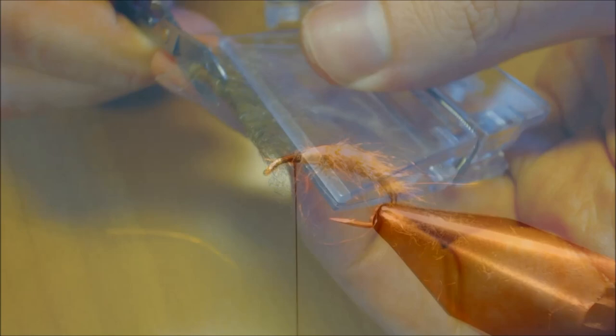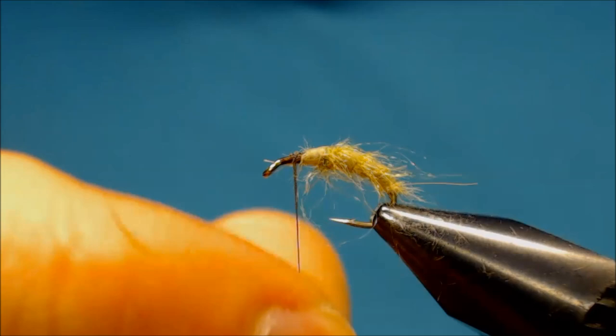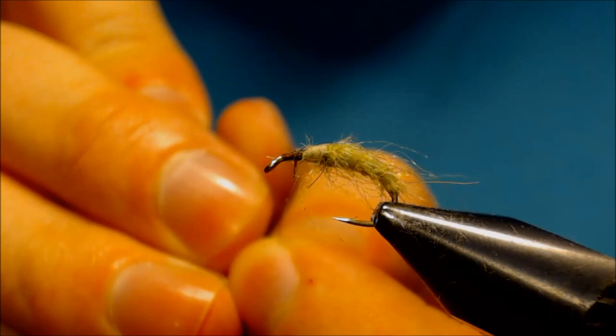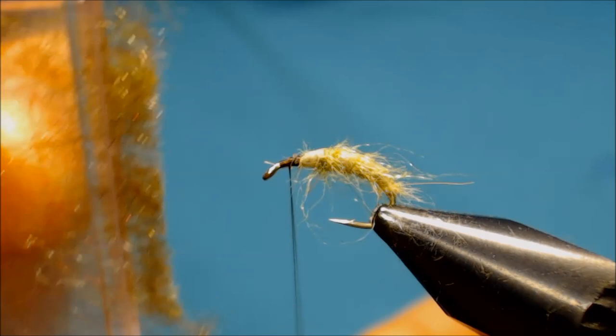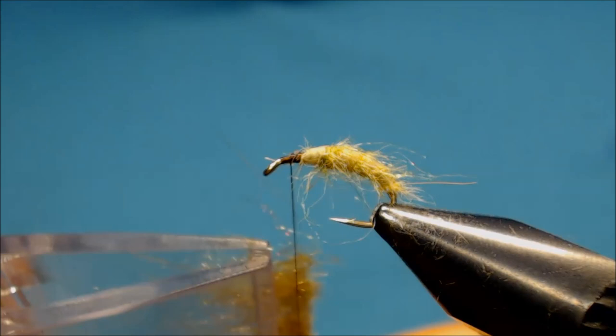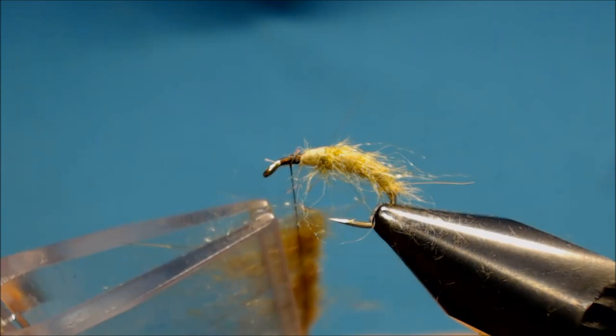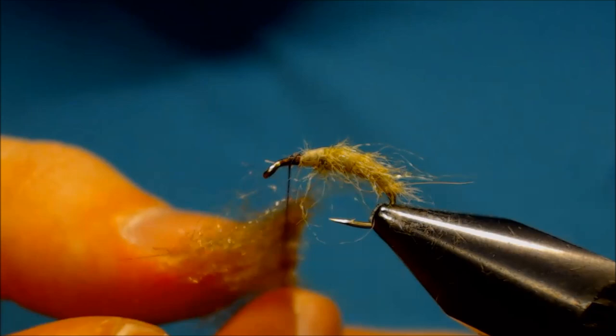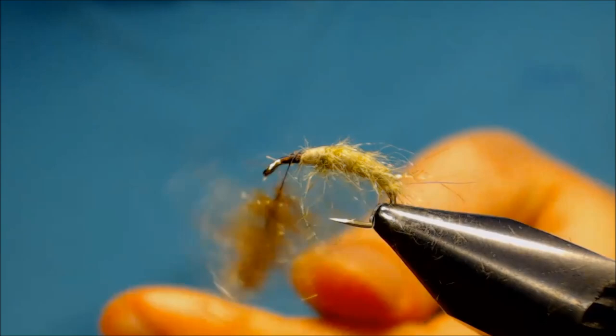And now we'll make a dubbing loop or a split thread. So for this I spin the bobbin counterclockwise. Then with a needle, split the thread in two. So we'll take our clip with our dubbing antron and CDC mix, and put it in the dubbing loop. Then spin some turns to secure, and then spin the bobbin clockwise.